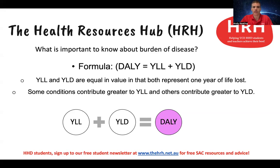YLL and YLD are equal in value — they both represent one year of life loss — but some conditions contribute greater to YLL and others contribute greater to YLD. For some conditions, people are more likely to die prematurely rather than live with them, so they contribute more to YLL than YLD. An example would be cancer, where people are unfortunately more likely to die prematurely. Both YLL and YLD are still relevant to cancer, but probably more YLL than YLD.